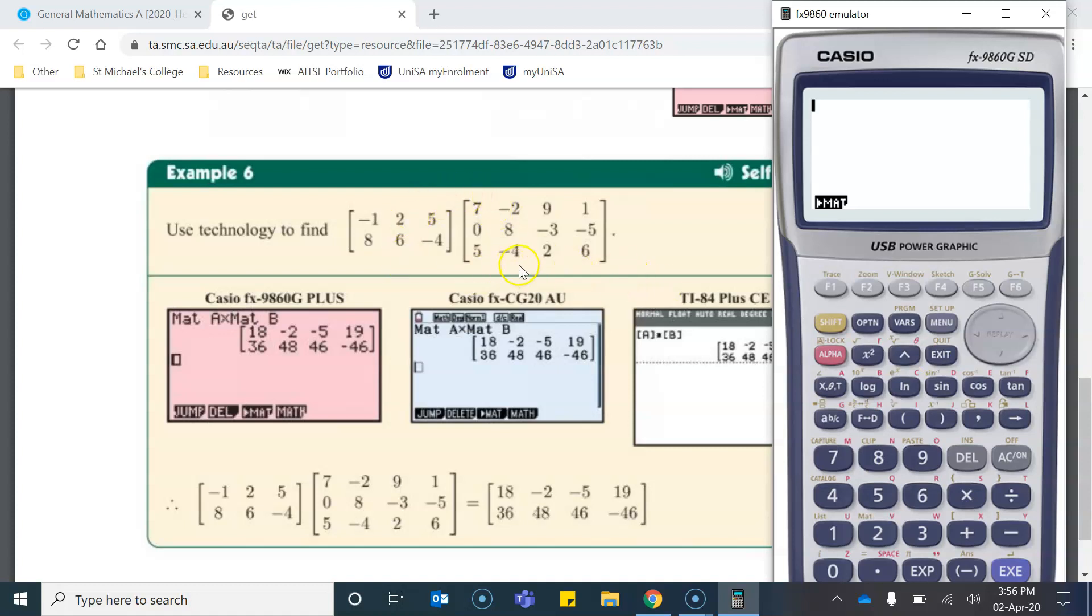Now, they would like us to multiply these two matrices by each other. What I have to do is, you'll notice that above the 2 in yellow, there's the letters MAT. To get the yellow function, I have to click shift, and then I click MAT, which gives me the matrix. Now remember, I've already stored the matrix A.